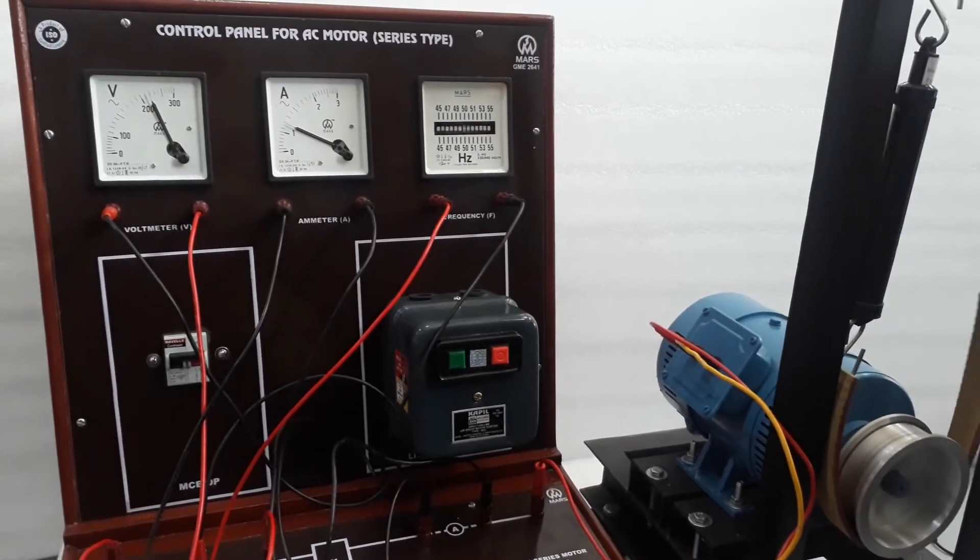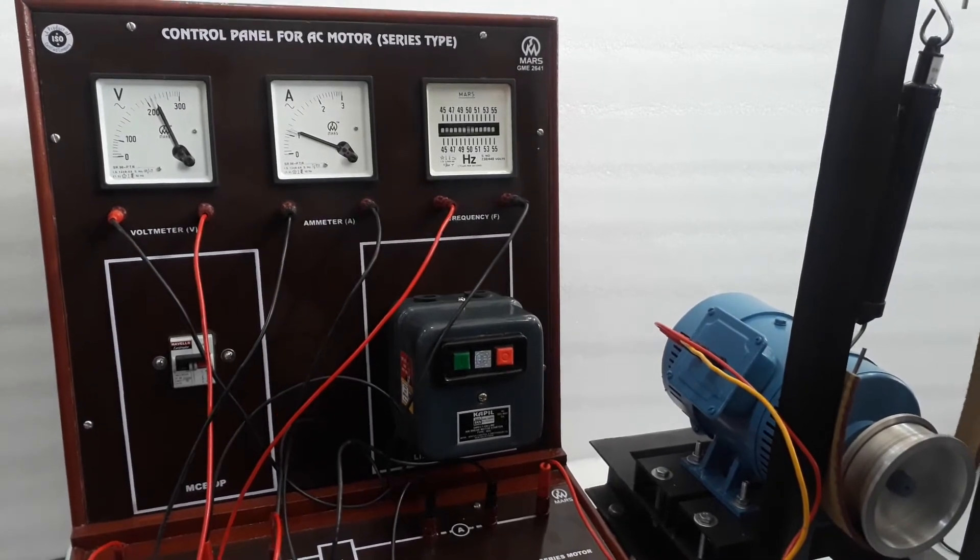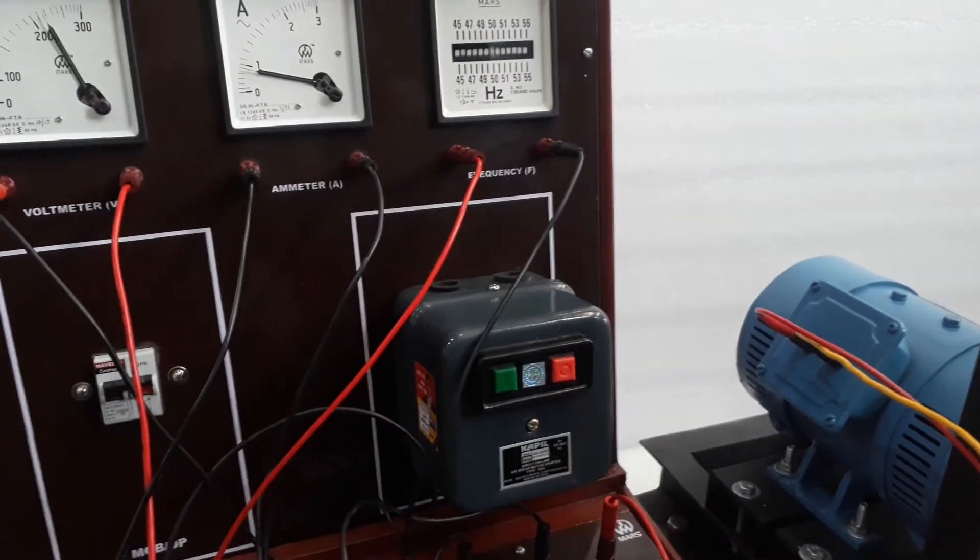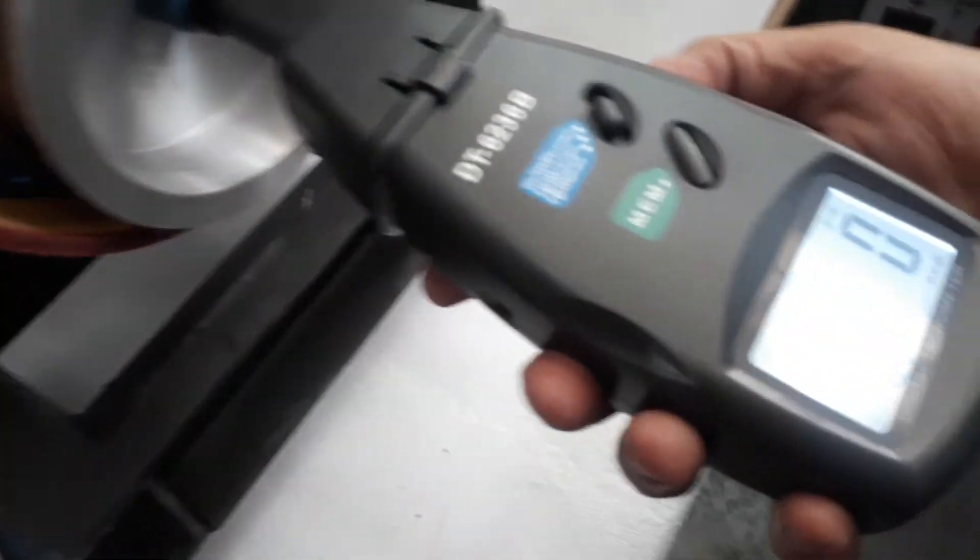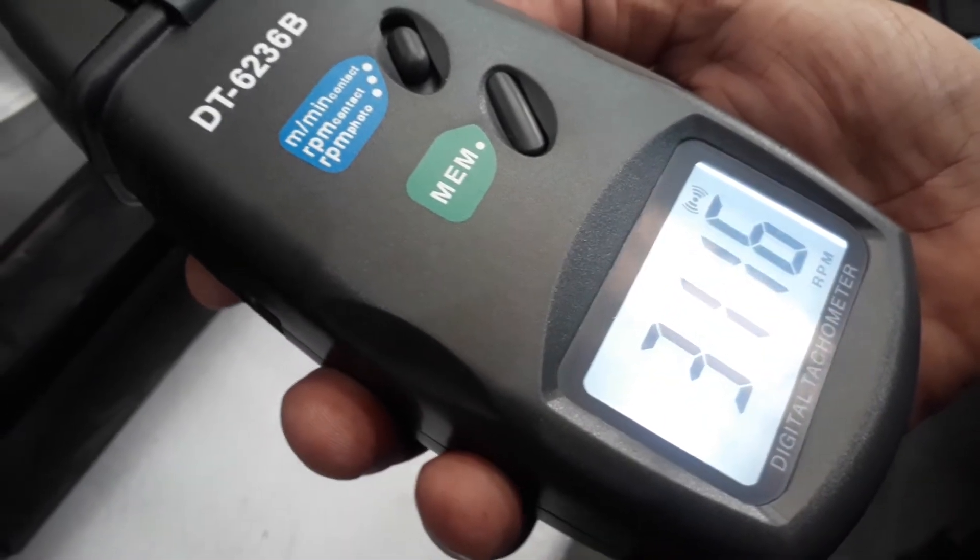Perform the AC motor series. And now without load, the RPM of this motor is 3000.